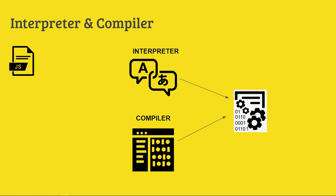So we have a JavaScript file. Then we have the interpreter and compiler, and eventually the end result is the machine code — that is 0s and 1s. Let's see the code, and how the interpreter and compiler do it.